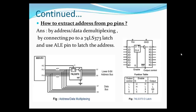To extract the address from Port 0 pins, address or data multiplexing is used by connecting Port 0 to a 74LS373 latch and using the ALE pin to latch the address. Here we have the 74LS373 D latch diagram. In the left figure, this latch is used to perform the demultiplexing.